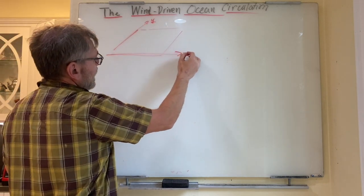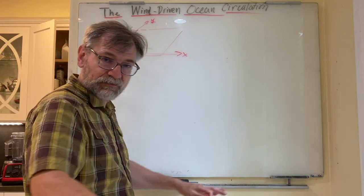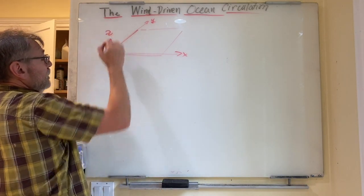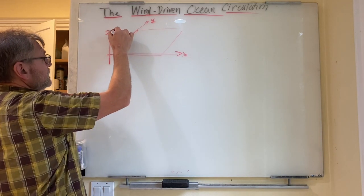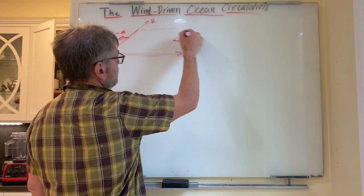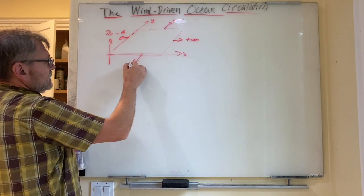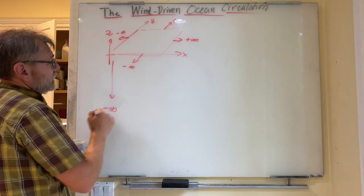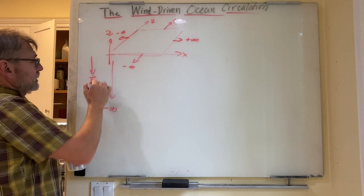The domain is an infinite domain. Northward is y, eastward is x, and we're going to neglect the sphericity of the earth — it's an infinite Cartesian plane. The z-axis points upward, going off to minus infinity downward. Gravity points downward.